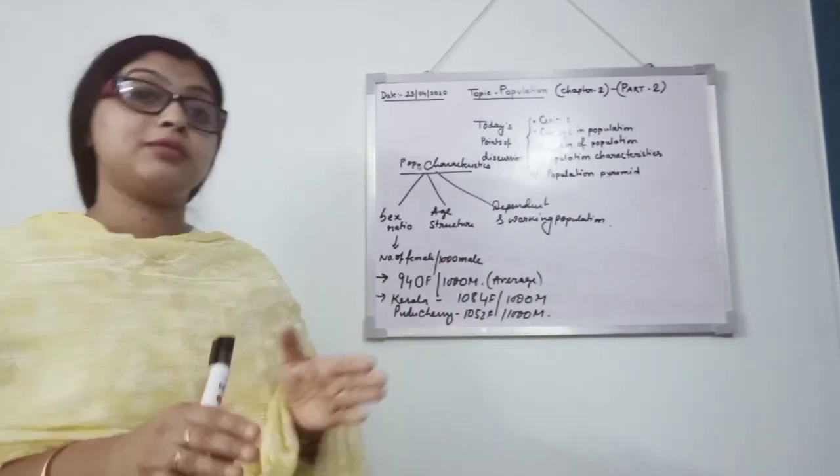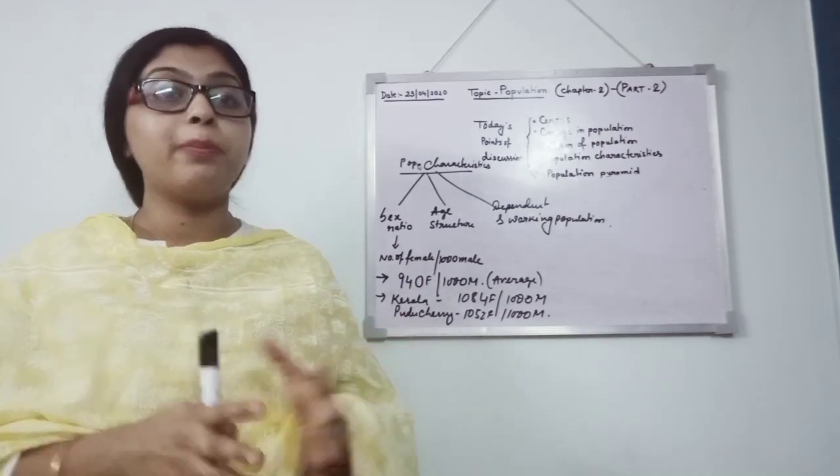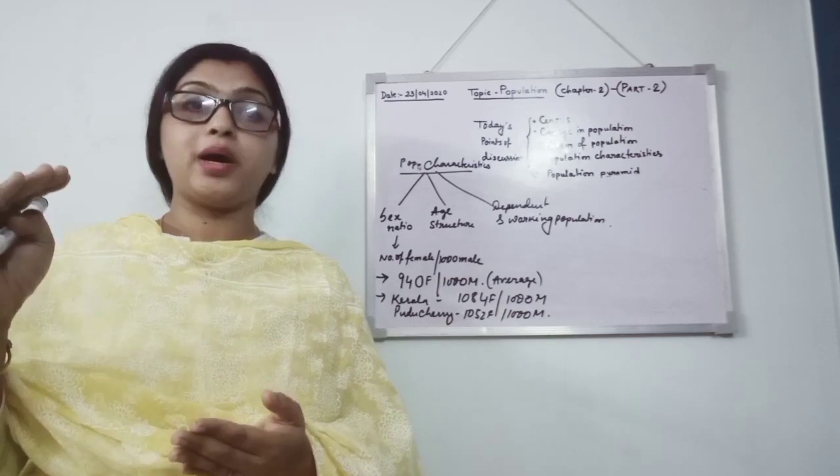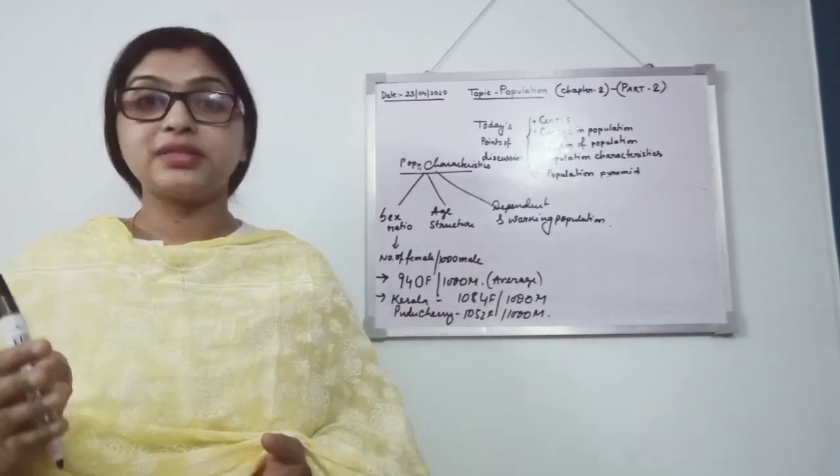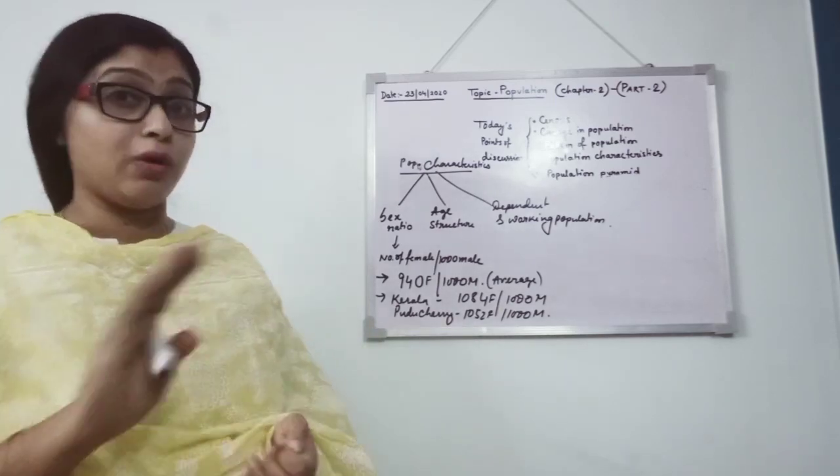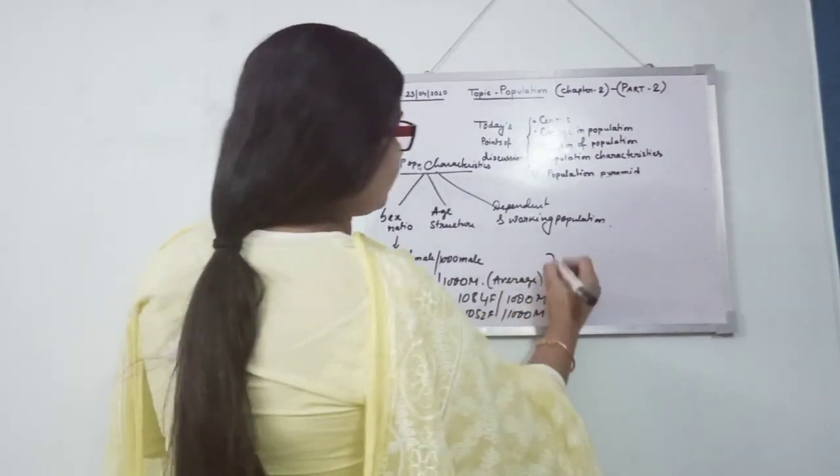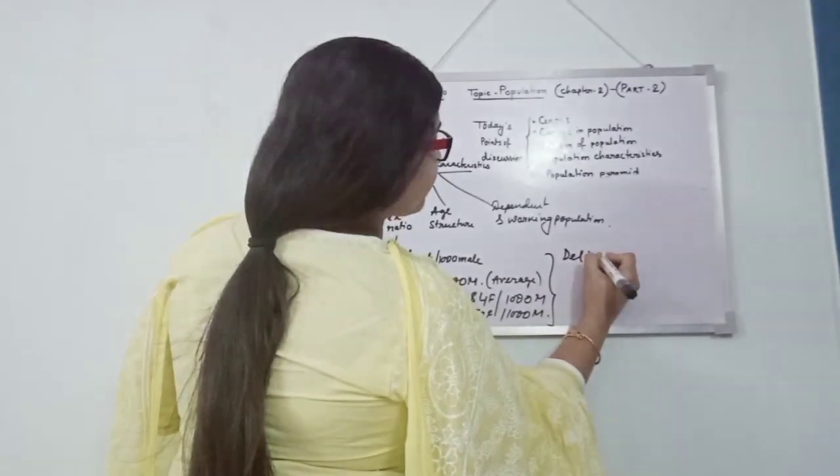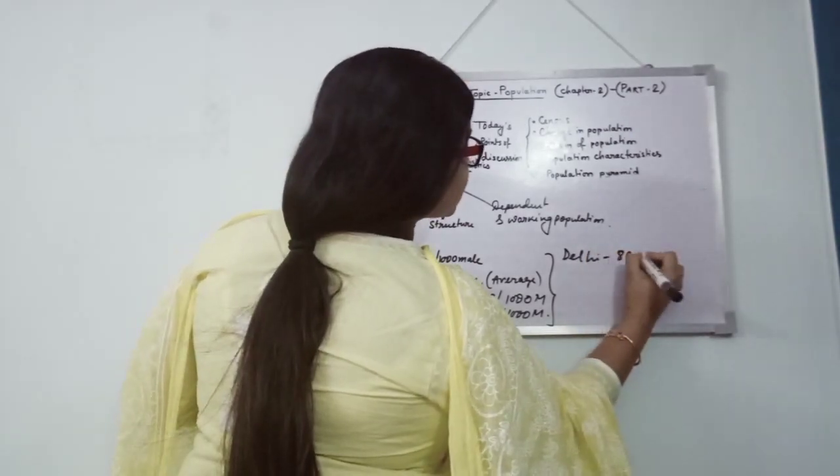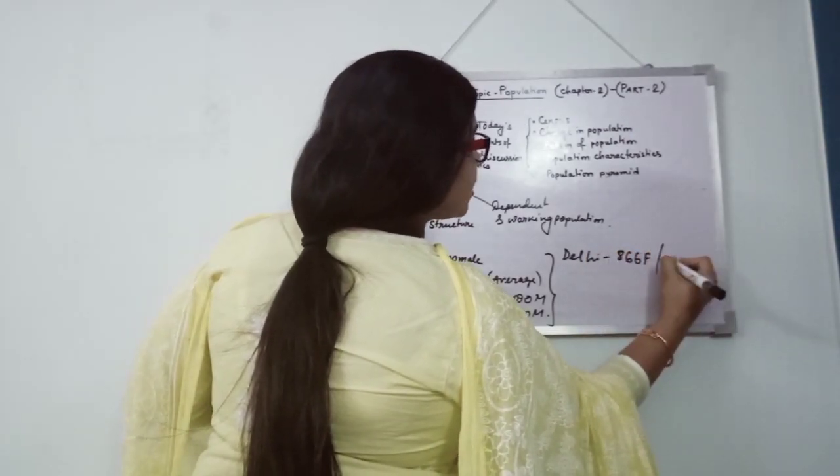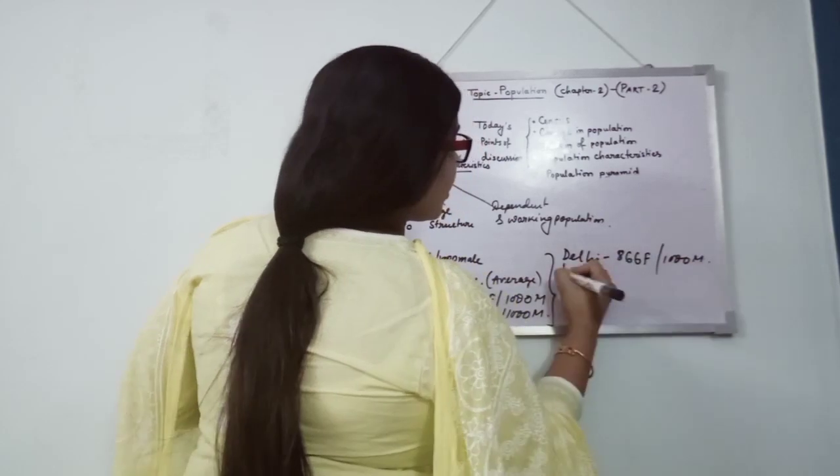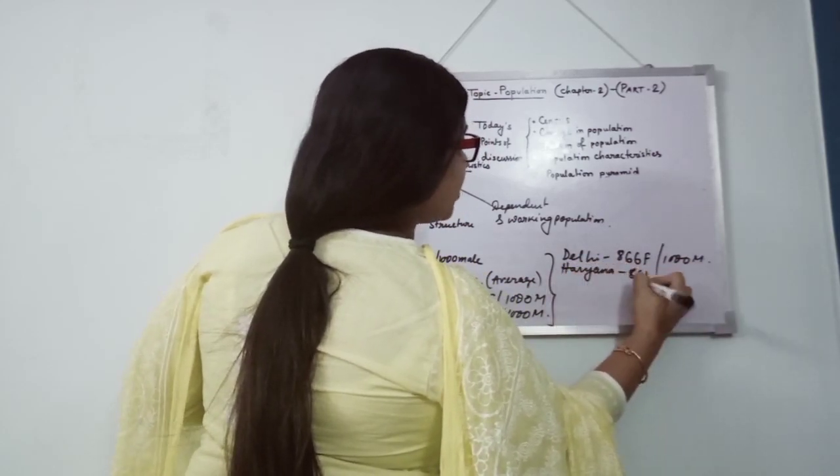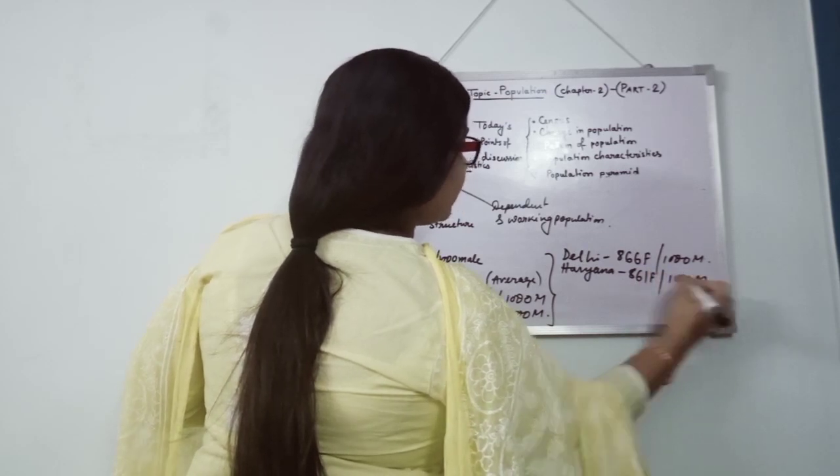But if we see the NCR area, you will be surprised. Though NCR area is developed, even having all the facilities, but sex ratio scenario is not good. In this region, Delhi is having 866 females per thousand males. Haryana, having 861 females per thousand males.